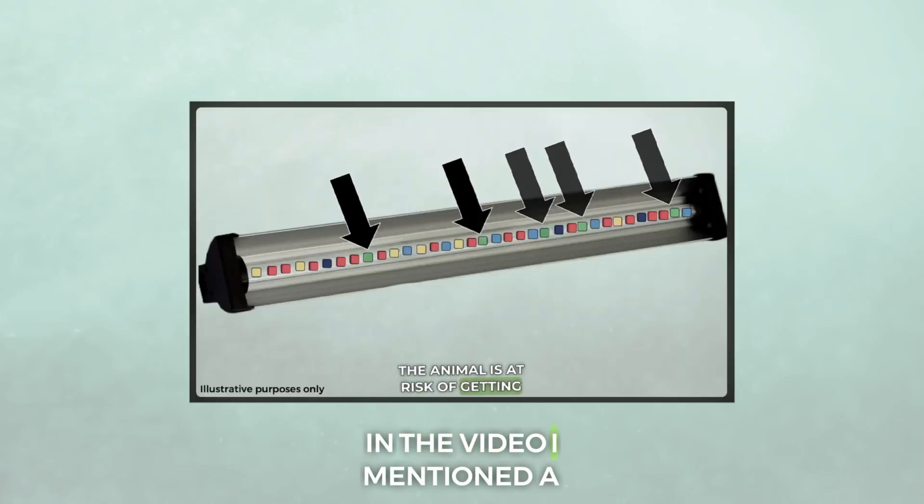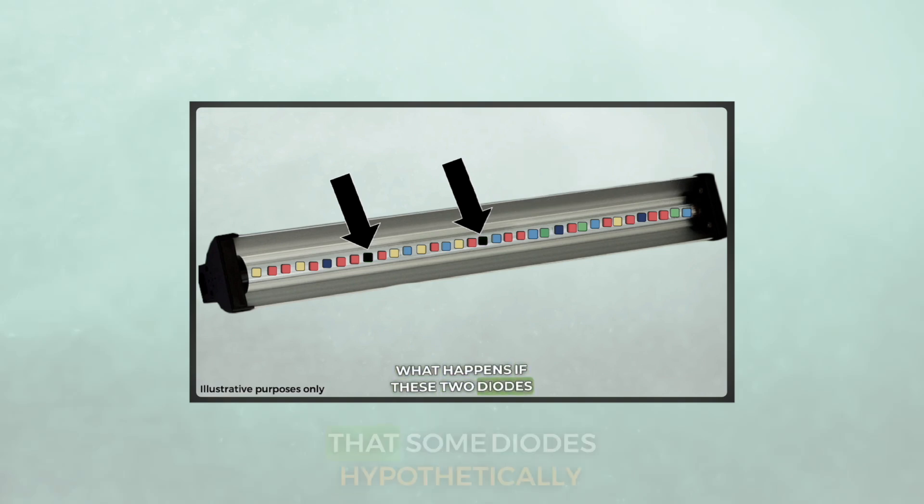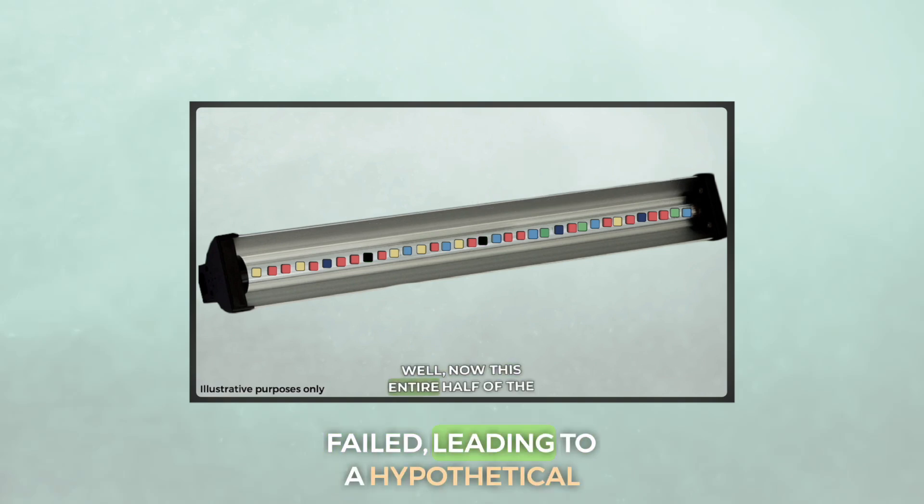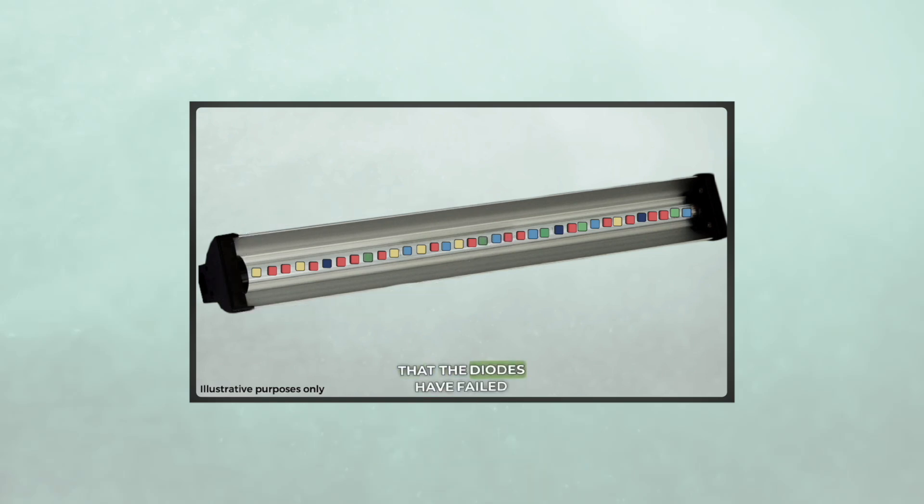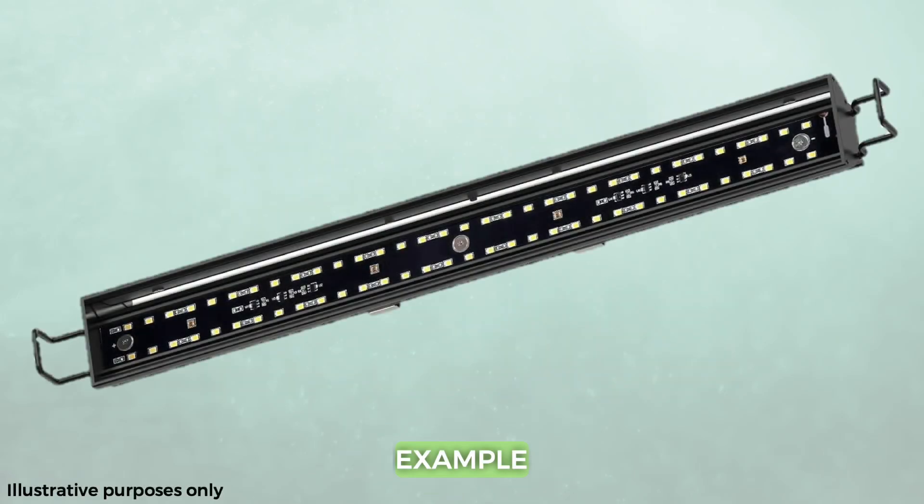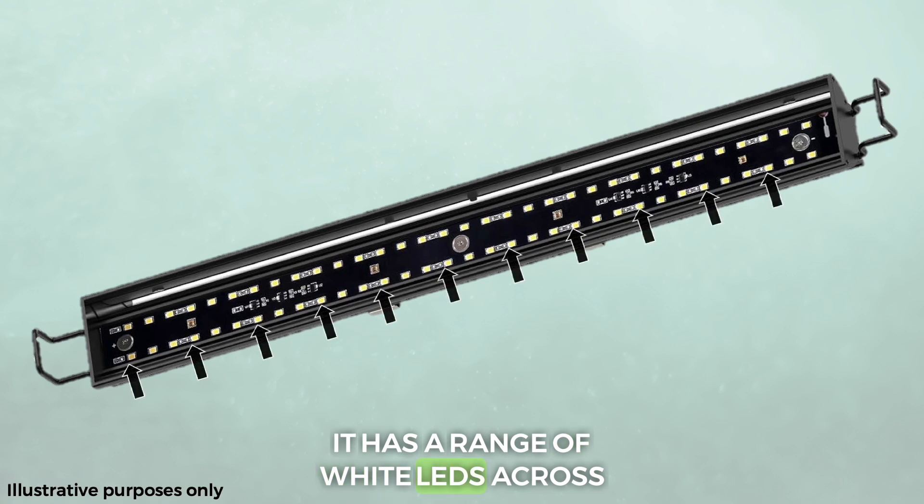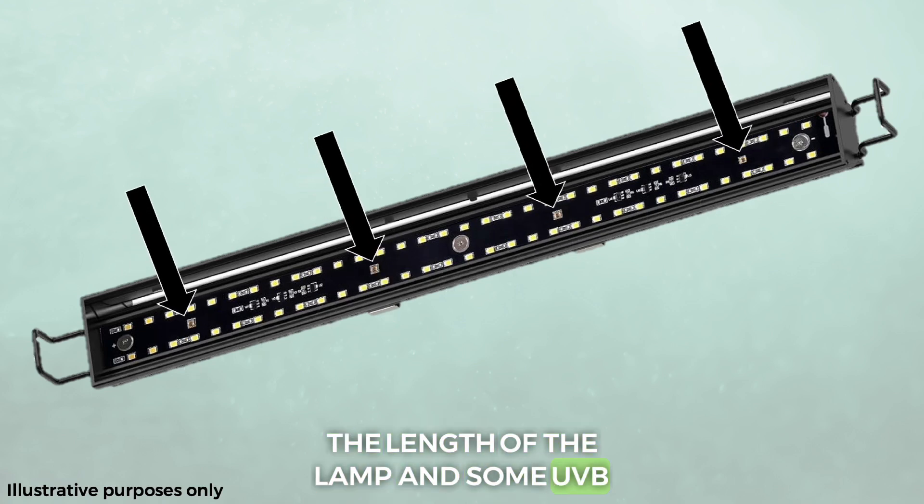Moving on a bit in the video, I mentioned a hypothetical bar lamp and the fact that some diodes hypothetically failed, leading to a hypothetical lamp that would be hypothetically dangerous in one half. Well, let's look at a very real example. Here's a lamp that I showed for a brief moment last time under the brand name Reptitrip. It has a range of white LEDs across the length of the lamp and some UVB diodes too.